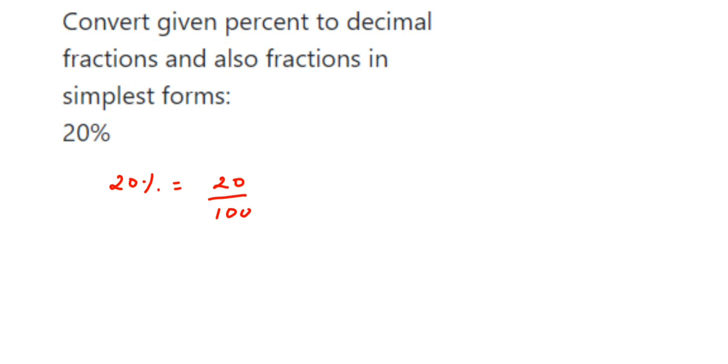Now this is a fraction form, but we have to bring this to the simplest form. Simplest form means you have to cancel it, bring it to the lowest form. Now cancel this in 20 table directly, or cancel this in 10 table, whichever way is easy for you, go for that. Your answer will be the same. I want to cancel directly in 20 table: 2 ones are 2, 5 fives are 100, so I got 1 by 5.